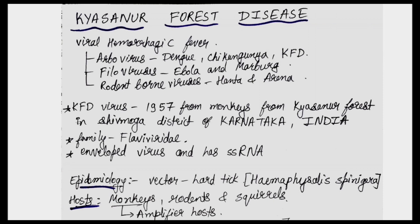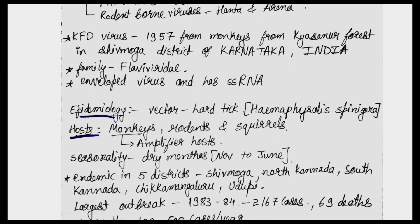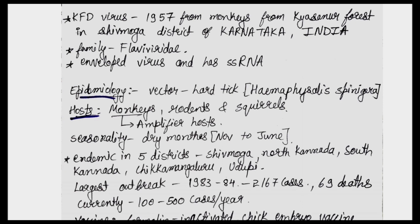Kyasanur Forest Disease is caused by KFD virus, first identified in 1957 from monkeys in the Kyasanur Forest of Shimoga district, Karnataka, India. It belongs to the family Flaviviridae and is an enveloped virus with a single-stranded RNA genome.